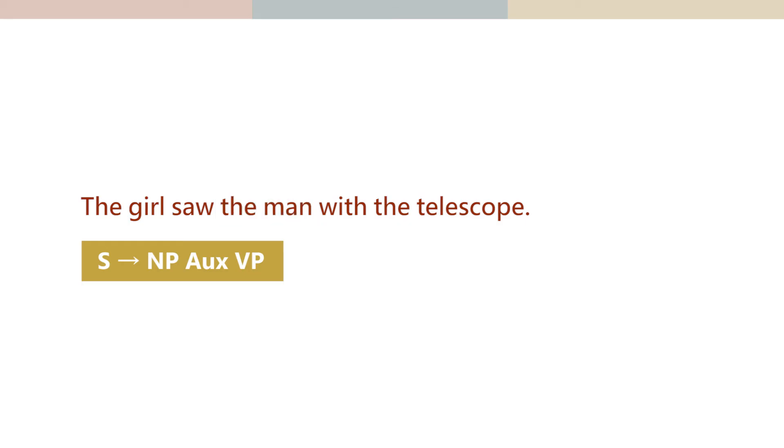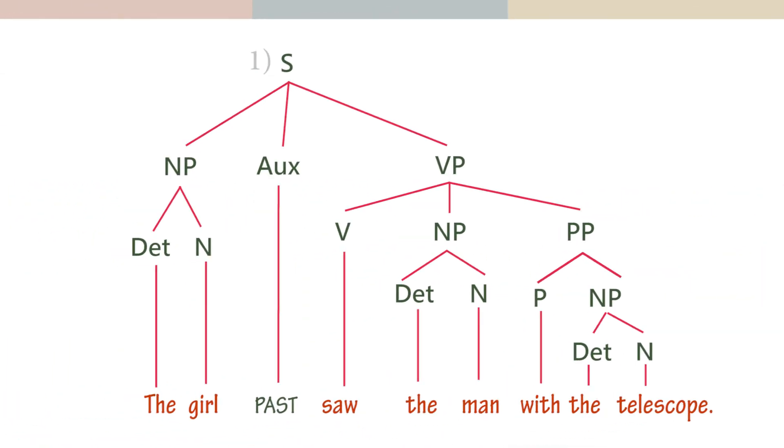In the first sense, in which it was the seeing, the act of seeing that happened with the telescope, the telescope becomes directly connected to the verb phrase node. Because it is directly integrated and related to the verb see.